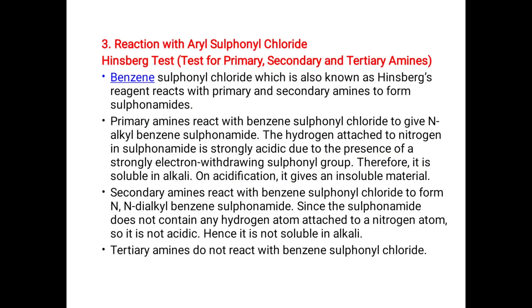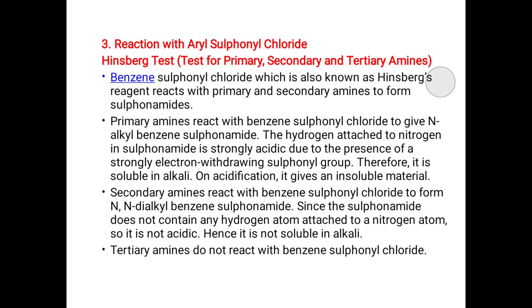Next, reaction with aryl sulfonyl chloride — the Hinsberg test. This is used to distinguish primary, secondary, and tertiary amines. The benzene sulfonyl chloride, also known as Hinsberg's reagent, reacts with primary and secondary amines to form a sulfonamide.